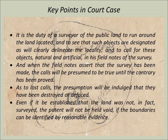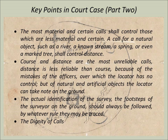As to lost calls, the presumption will be indulged that they have been destroyed or defaced. Even if it be established that the land was not, in effect, surveyed, the patent will not be held void if the boundaries can be identified by reasonable evidence. The most material and certain calls shall control those which are less material and certain. A call for a natural object, such as a river, a known stream, a spring, or even a marked tree, shall control distance. The course and distance are the most unreliable calls. Distance is less reliable than course because of the mistakes of the officers, over which the locator has no control.